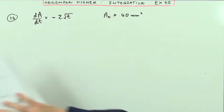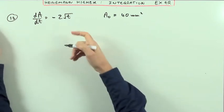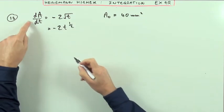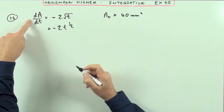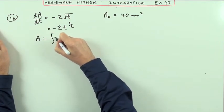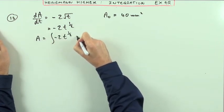Find a formula for A in terms of t. I'll just change it, make that 2t to the power of 1/2. Now, if that's the derivative and I want a formula for A, I'll just have to integrate it up. So A is going to be the integral of -2t^(1/2) dt.